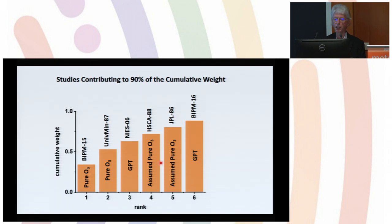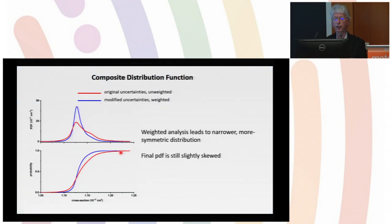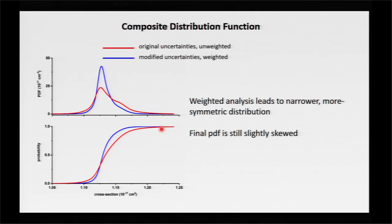As well as three others that were based on just direct absorption of relatively pure ozone. Here I'm looking at the distribution functions of the data before and after the weighting. The red curve shows the original distribution function—it looks somewhat bimodal and highly skewed. After weighting the data, we get a more symmetric distribution and a narrower distribution function.